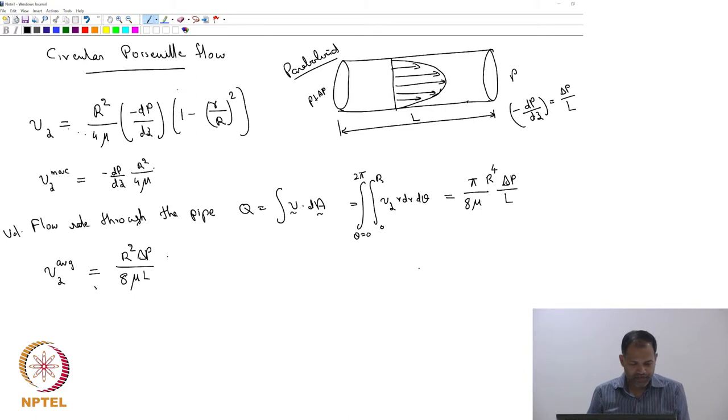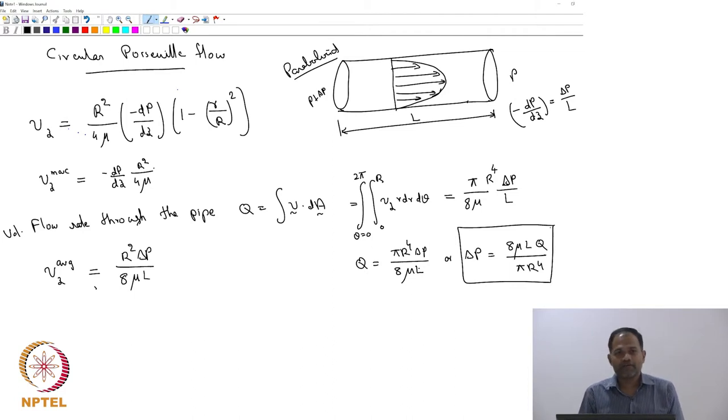This expression Q equals πr⁴Δp divided by 8μL, or Δp equals 8μLQ divided by πr⁴. This is one of the most used expressions. Why? Because given a flow rate, pipe length, and pipe radius, you will know which pump you should use to pump a fluid of viscosity μ. That is what that expression is giving you. Therefore, it is used highly.